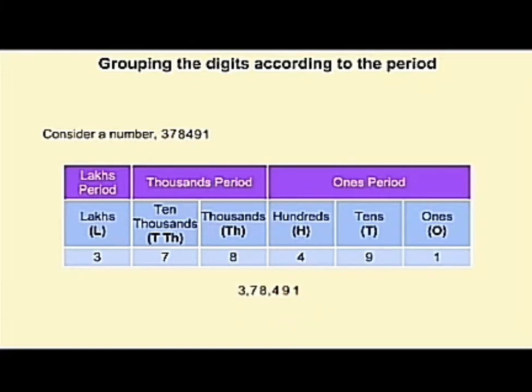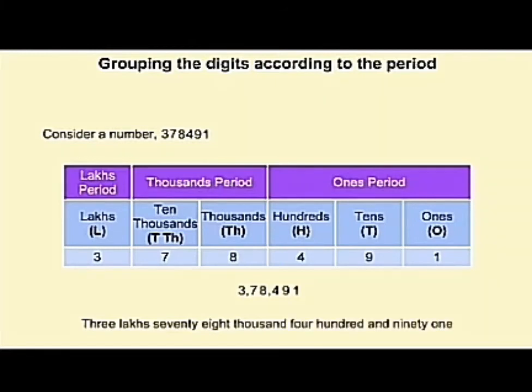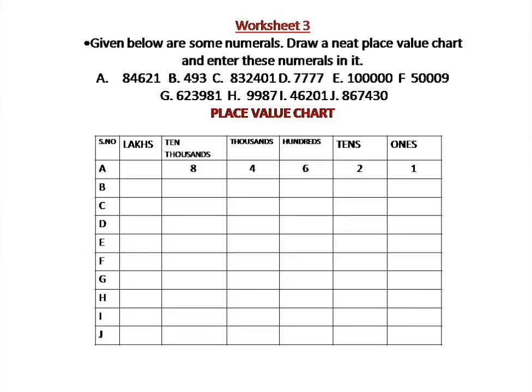So this number is read as three lakh seventy-eight thousand four hundred ninety-one (378,491). Hope you understand the place value chart, children.